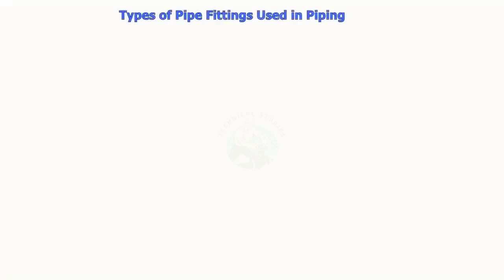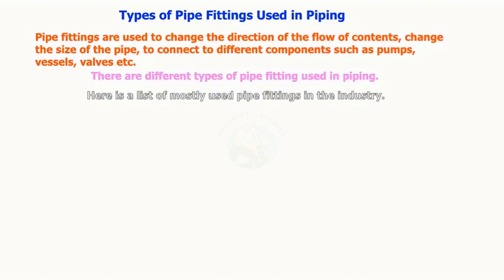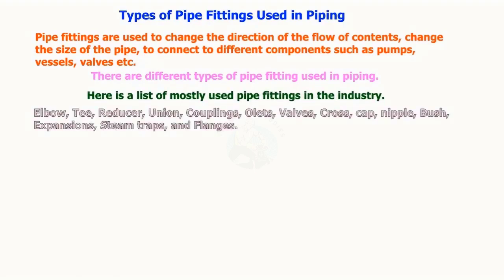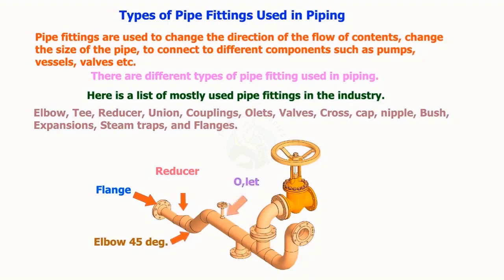Pipe fittings are used to change the direction of the flow of contents, change the size of the pipe, and connect to different components such as pumps, vessels, valves, etc. Here is a list of mostly used pipe fittings in the industry: elbow, T, reducer, union, couplings, olets, valves, cross, cap, nipple, bush, expansions, steam traps, and flanges.